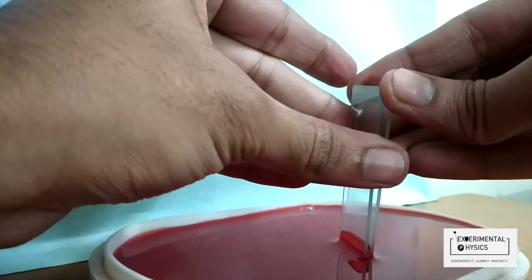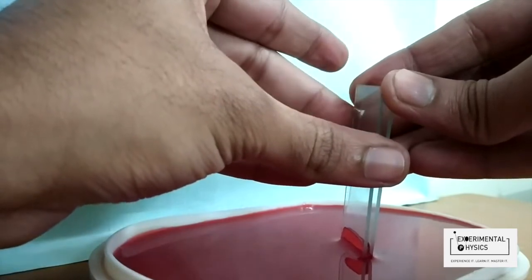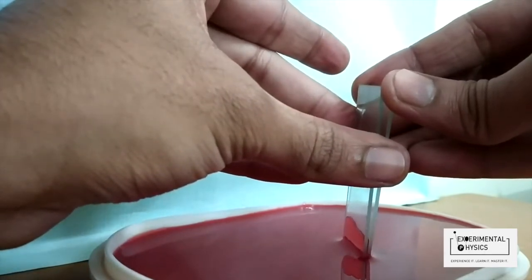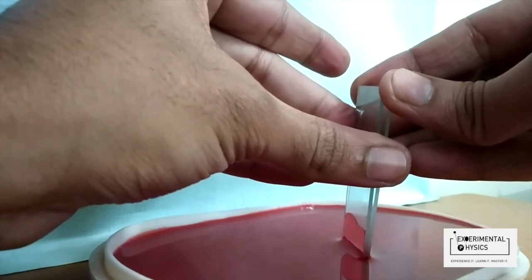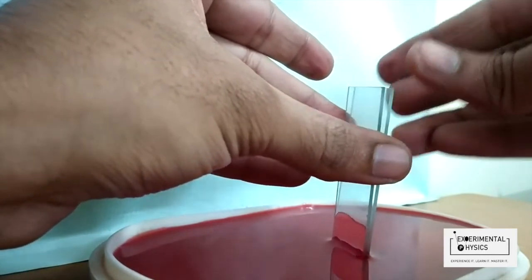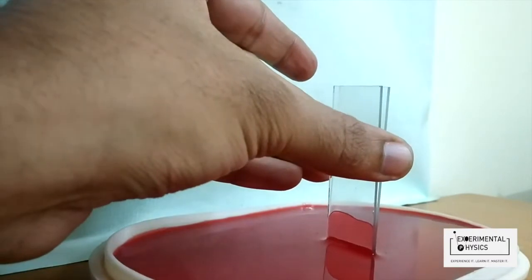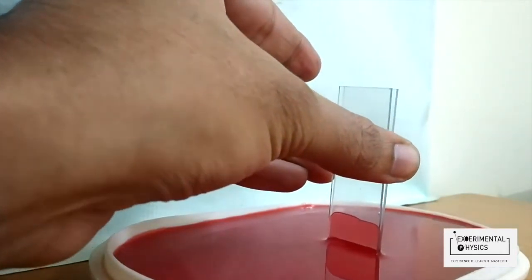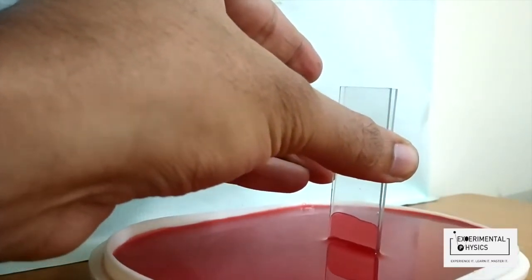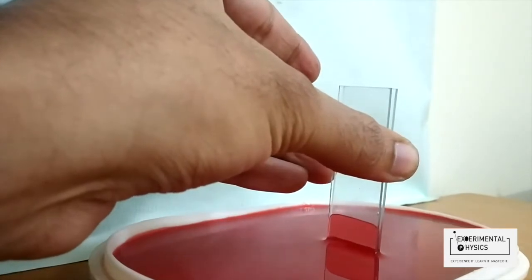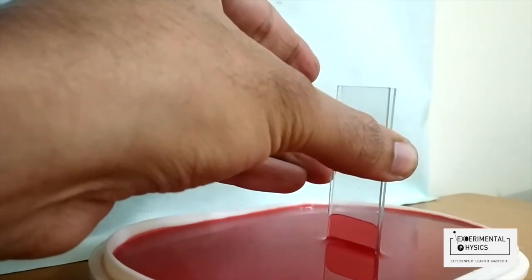The good thing about this demo is I can decrease the separation between the glass slabs. And as I decrease the separation, water will rise even more. See, I'm decreasing the separation. You can see from this angle that water has risen to a very good height. This height is maybe equal to 1 centimeter.